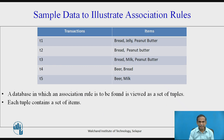To represent association rule formation, we use sample data where T1, T2 up to T5 are five transactions, and each transaction has items which are purchased in it. For example, T1 has bread, jelly, peanut butter. T2 has bread and peanut butter. T3 has bread, milk, peanut butter. T4 has beer and bread. T5 has beer and milk.